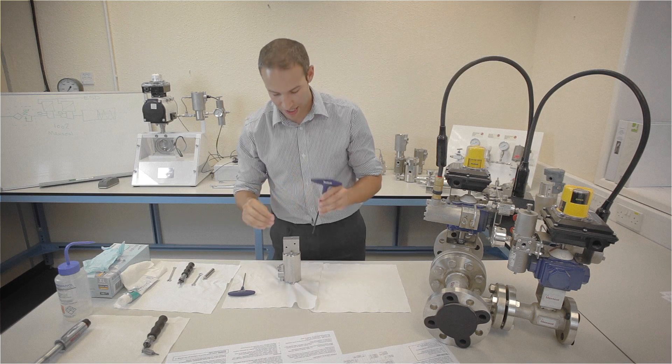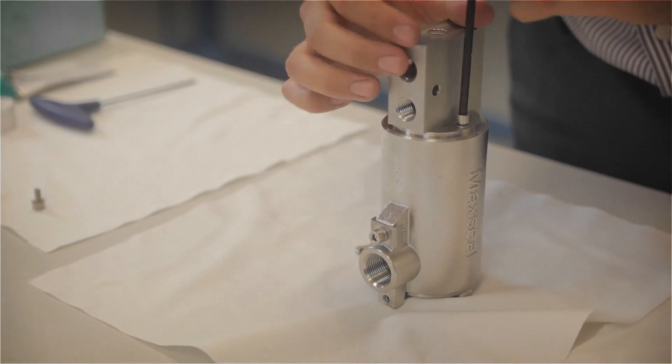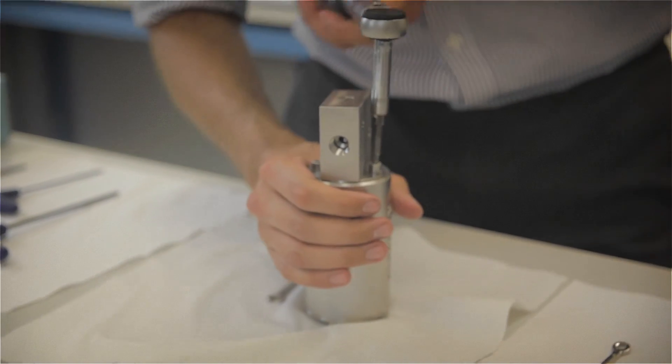Using a 4mm hex key, screw the two screws into place. Tighten the bolts with a torque wrench as per the operations and maintenance manual.